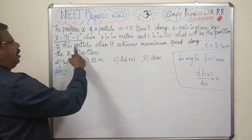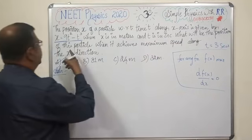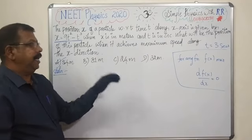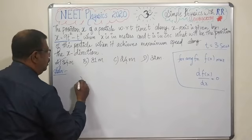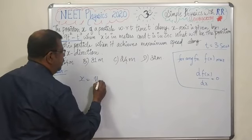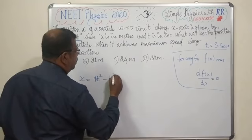Now, what will be the position of the particle when it achieves maximum speed? Maximum speed occurs at t equals 3 seconds.